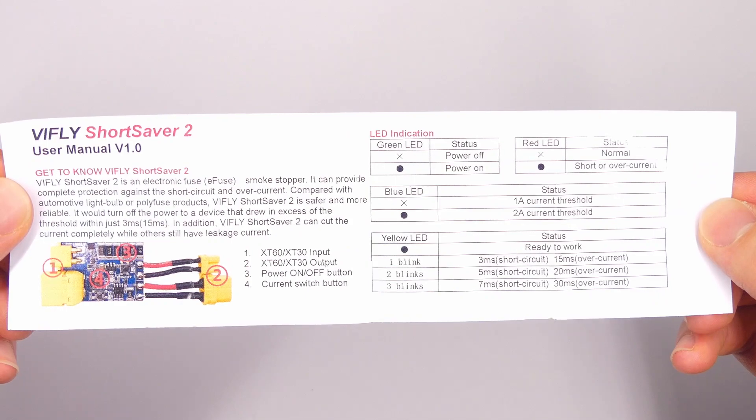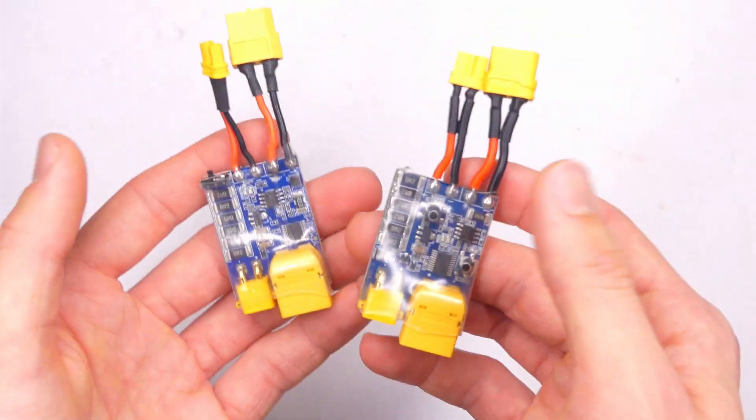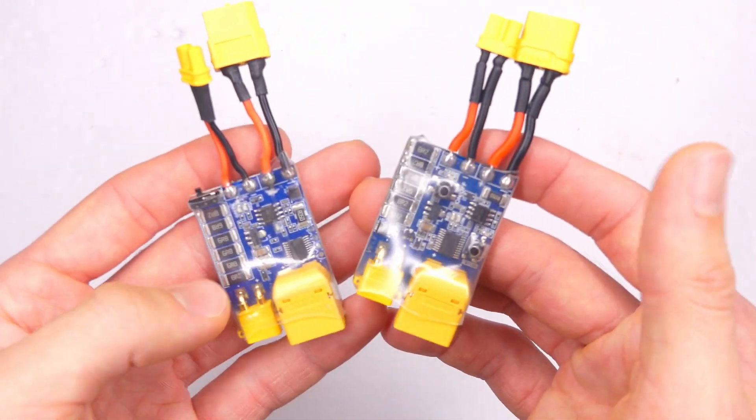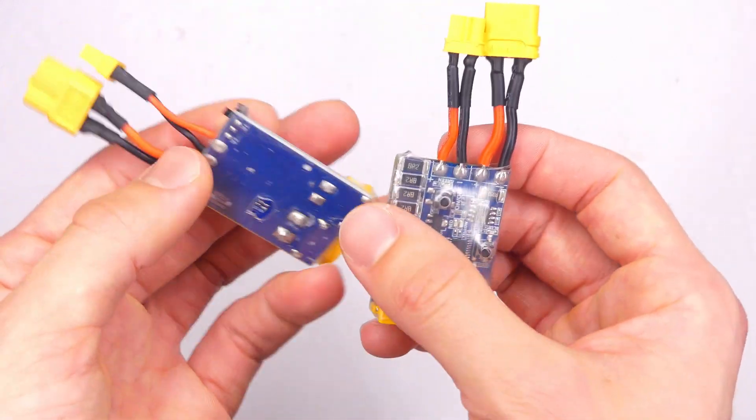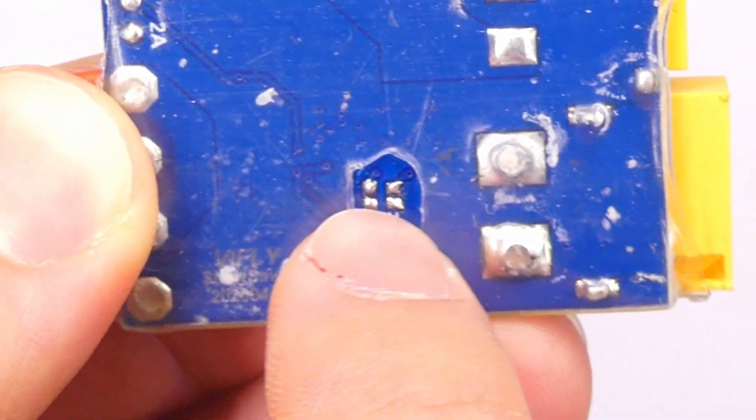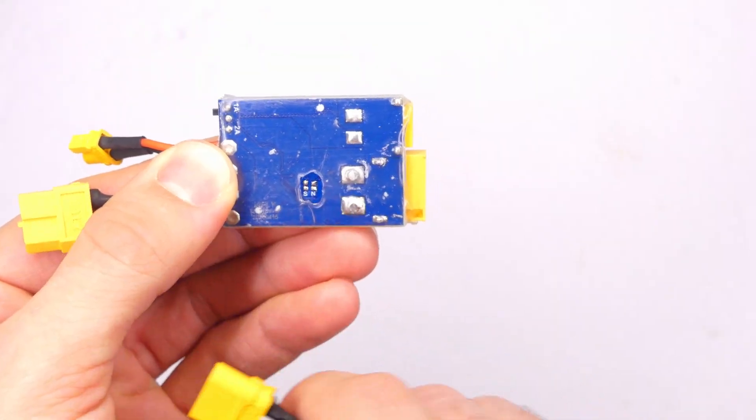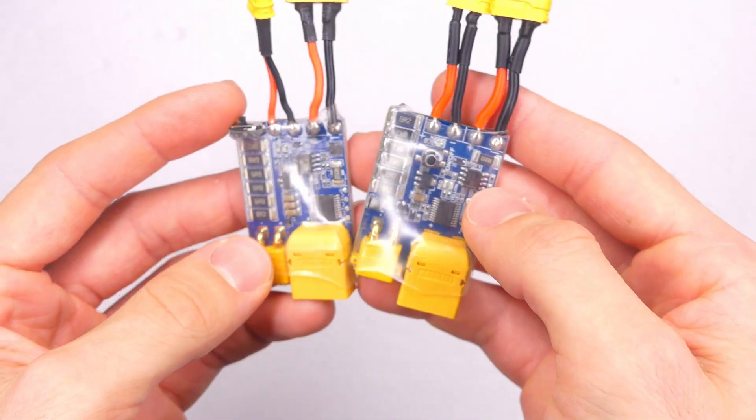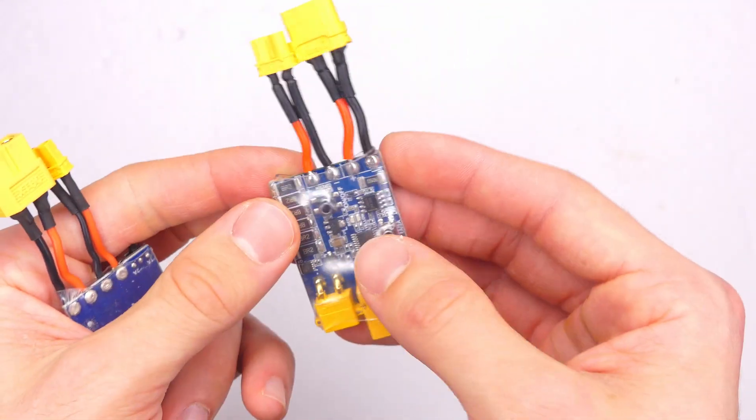And you can change how quickly the device actually gets tripped. And the old one had little solder pads on the back and you had to solder them, kind of bridge them to change the setting, how fast it would actually trip.